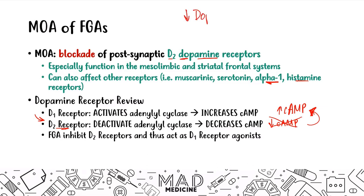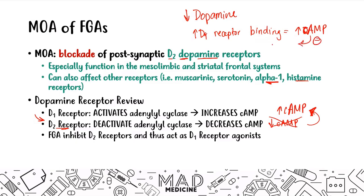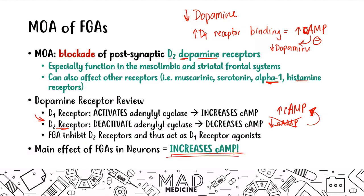When D2 is blocked, dopamine can only bind to D1, increasing D1 receptor binding and raising cyclic AMP. This increased cyclic AMP triggers negative feedback, leading to decreased dopamine production to compensate. So the main effect of first-gen antipsychotics on Step 1 is not to increase dopamine but to increase cyclic AMP — that's what ultimately happens in the neurons.